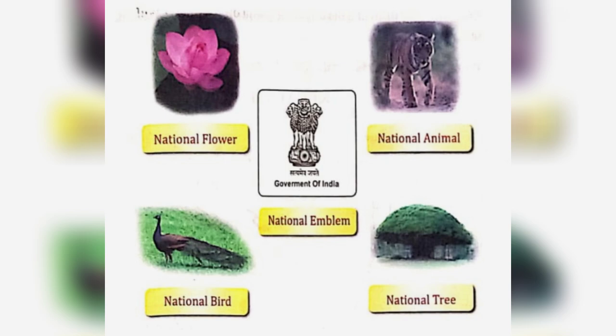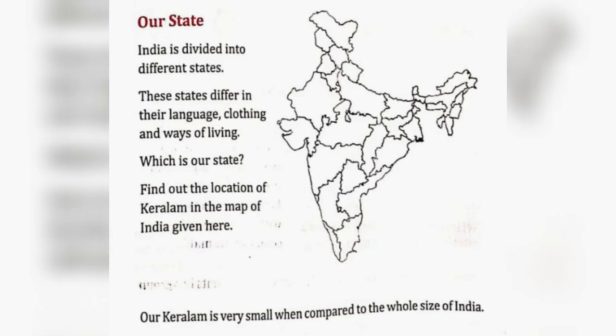The National Flower is Lotus. The National Animal is Tiger. The National Emblem is the State Emblem of India. The National Bird is Peacock. The National Tree is the Banyan Tree.